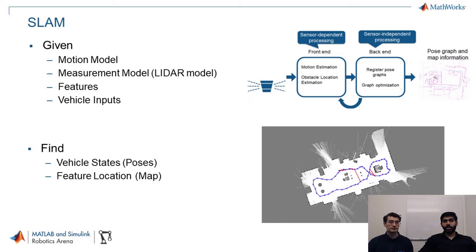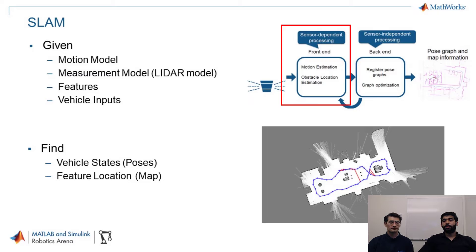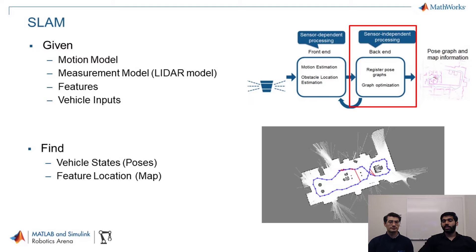Let's take a look at how a SLAM algorithm is implemented. First we have a motion model of the robot, which is basically kinematics. Then we have a measurement model, which is a sensor model — in this case a LiDAR model. Then you have control inputs. Based on these, you find the robot's pose and feature locations. The front-end handles sensor data for motion and obstacle estimation, while the back-end registers poses, performs optimization, and outputs a pose and map.